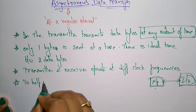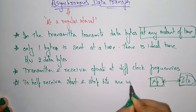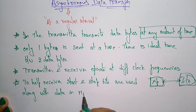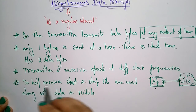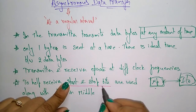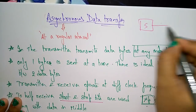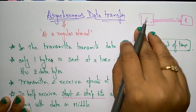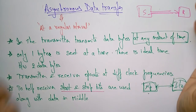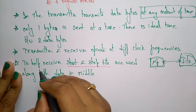To help the receiver, start and stop bits are used along with the data in the middle. This is the main difference between synchronous and asynchronous: in synchronous we do not use start and stop bits, whereas in asynchronous we do. In synchronous data transmission, the sender continuously sends data without regard for whether the receiver is ready or receiving correctly.